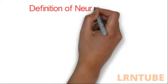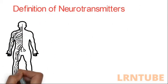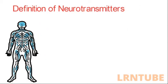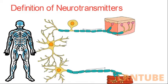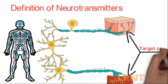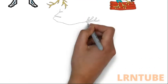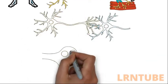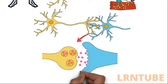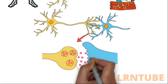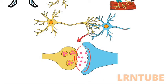Definition of neurotransmitters: neurotransmitters are chemical messengers in the body. Their job is to transmit signals from nerve cells to target cells. Communication between two neurons happens in the synaptic cleft, which is the small gap between the synapses of neurons.